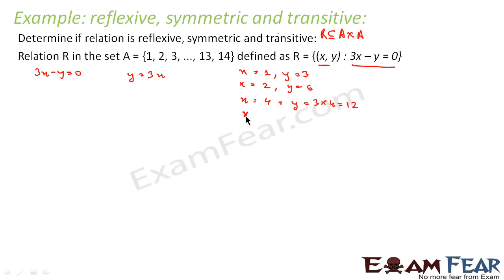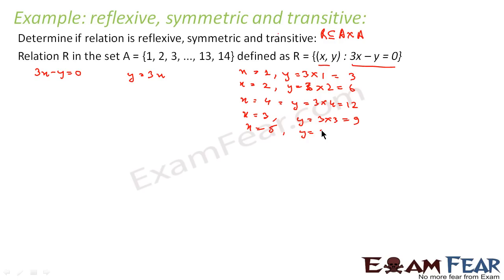I missed x = 3, so let me put that. If x = 3, y = 3×3 = 9. If x = 5, y = 3×5 = 15, but 15 is not part of this set because the maximum is 1 to 14. If x = 6, y = 18, also not part of the set. So x = 4 is the maximum value for which the element can be in this set.